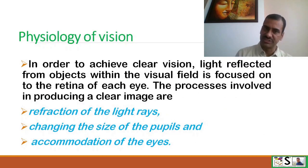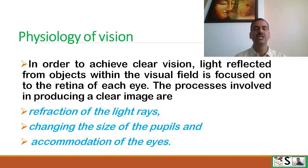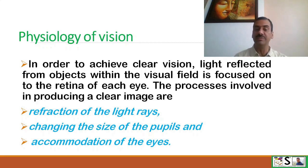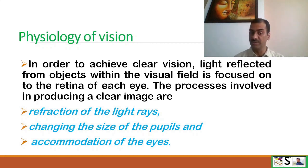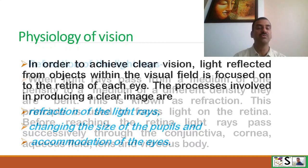Physiology of Vision. In order to achieve clear vision, the light reflected from the object within the visual field is focused to the retina of each eye. The process involved in producing a clear image includes refraction of light rays, changing the size of the pupil, and accommodation of the eyes. We will discuss each one by one.